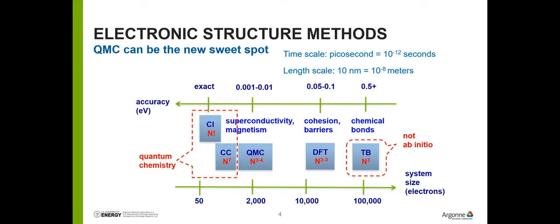QMC is cheaper than typical quantum chemistry methods because of its appealing scaling — N to the third or N to the fourth, depending on what problem you're solving. Another advantage of quantum Monte Carlo is it scales very well on a massive number of nodes. In a supercomputer, in the past, we could scale up to close to 1 million CPU nodes — not even CPU cores. You can multiply by additional factors on top of that.